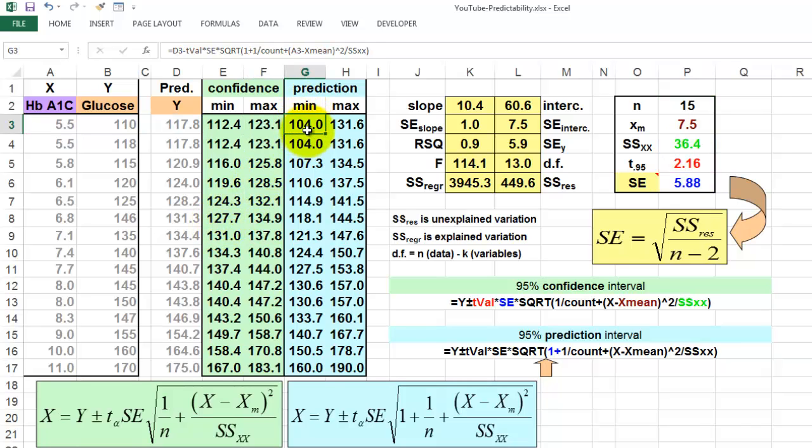A similar story for this one, but now we have to use 1 plus 1 divided by n, because this is the prediction interval, and a similar story for that column.